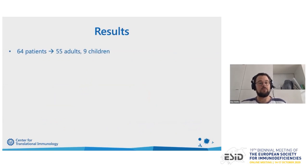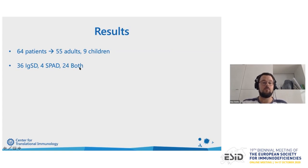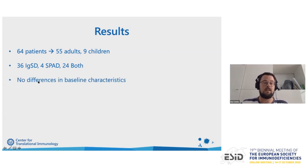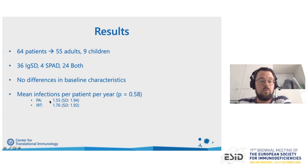We included 64 patients — 55 adults and nine children — with IgG subclass deficiency, specific antibody deficiency, or both. We had 36 patients with IgG subclass deficiency, four with only specific antibody deficiency, and 24 who had a combination. Baseline characteristics showed no differences between patients. When we looked at the primary outcome, the mean infections per patient per year did not differ between the two study arms. The PA arm had 1.55 infections per patient per year and the IRT arm had 1.76, which was not statistically significant.